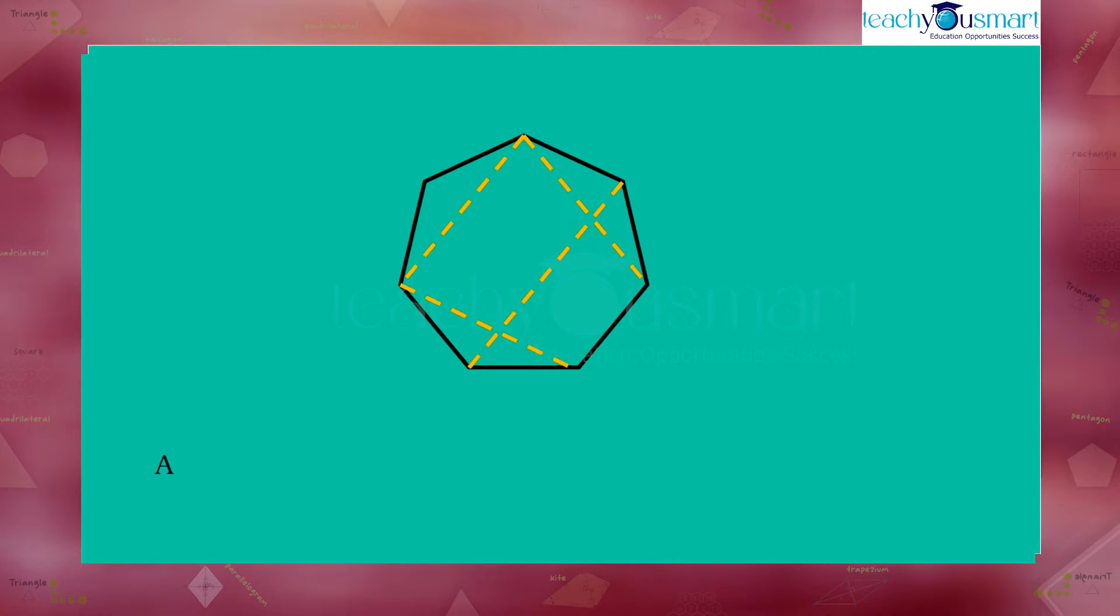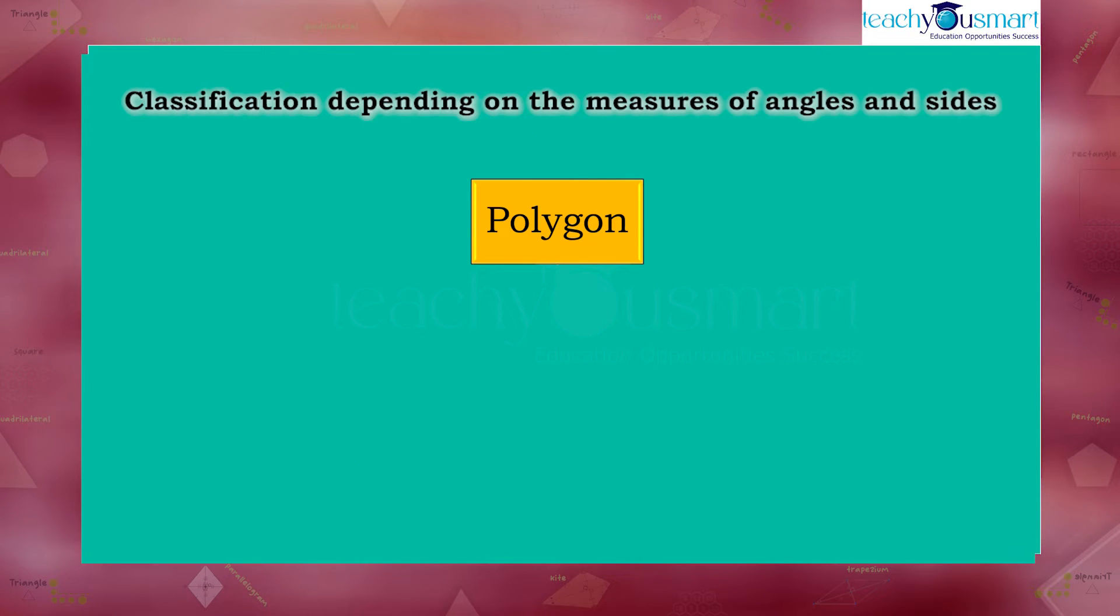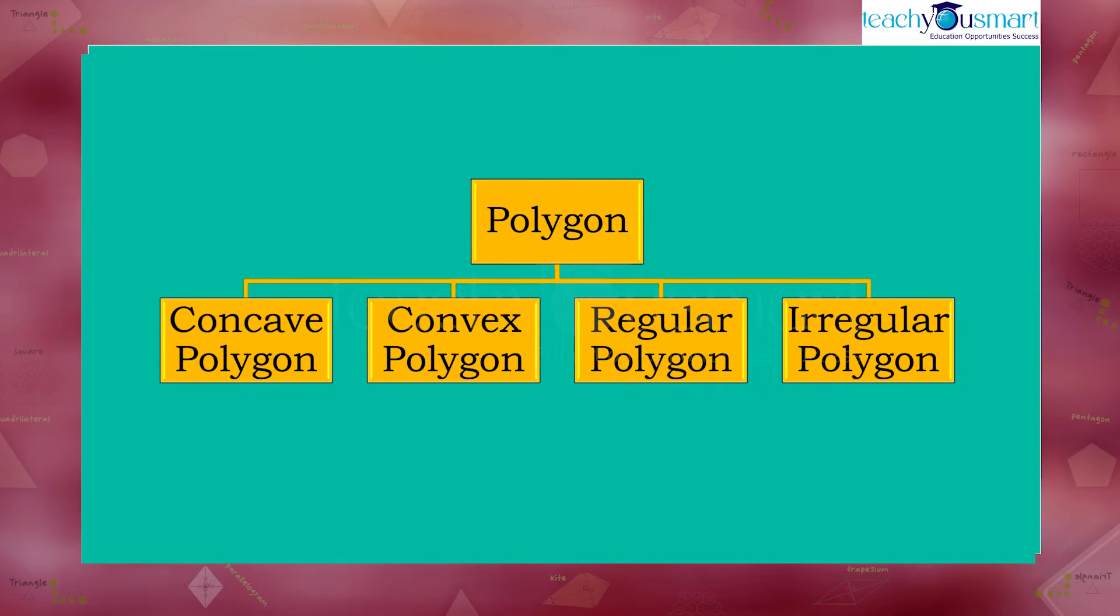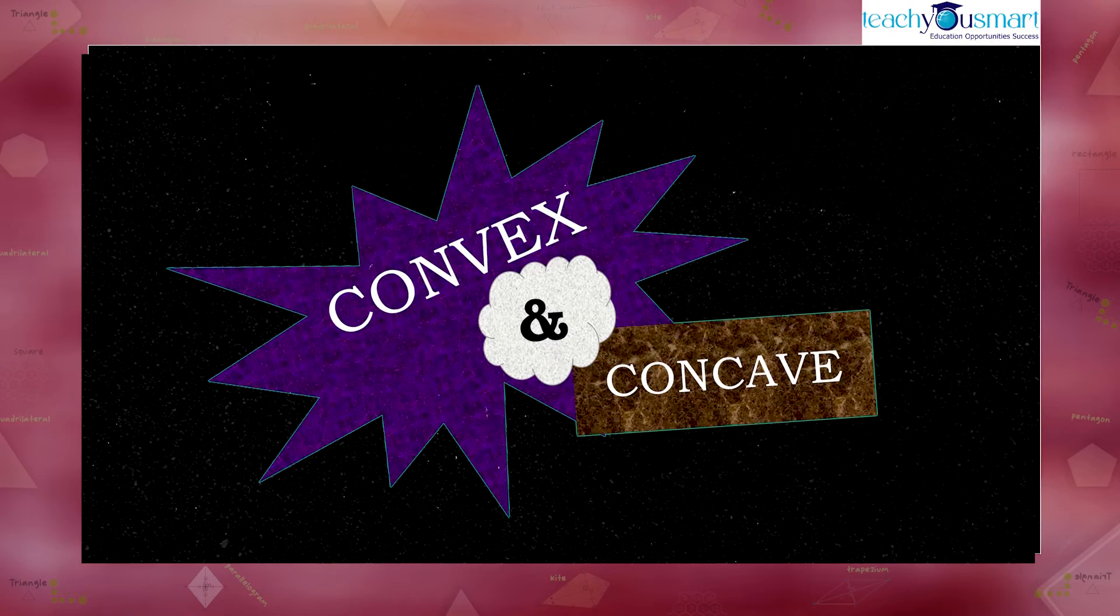Now let's classify the polygons according to the measure of angles and sides. They are concave and convex polygon, regular and irregular polygon. Let's have a comparison between convex polygon and concave polygon.